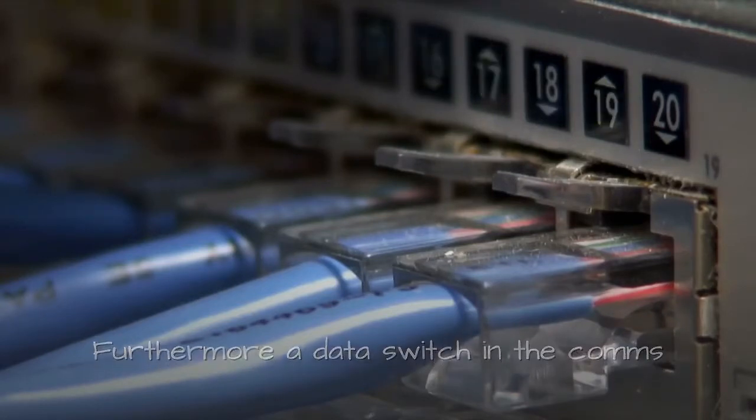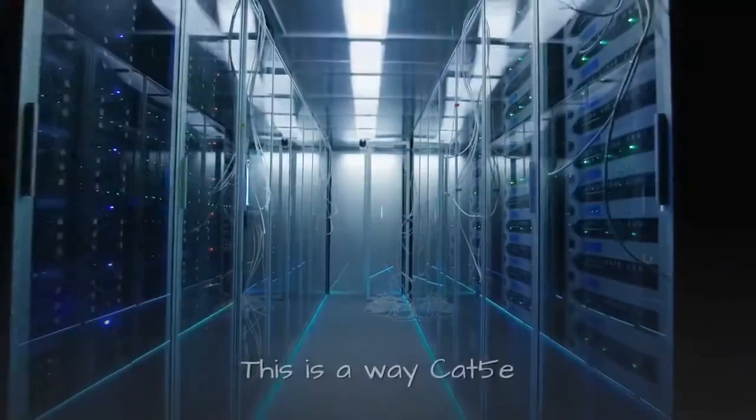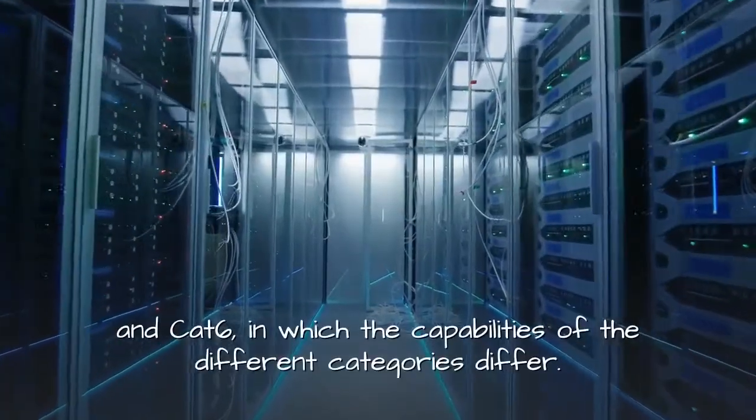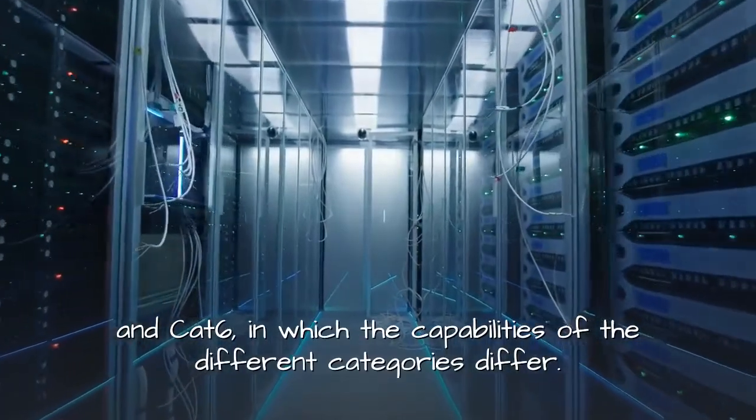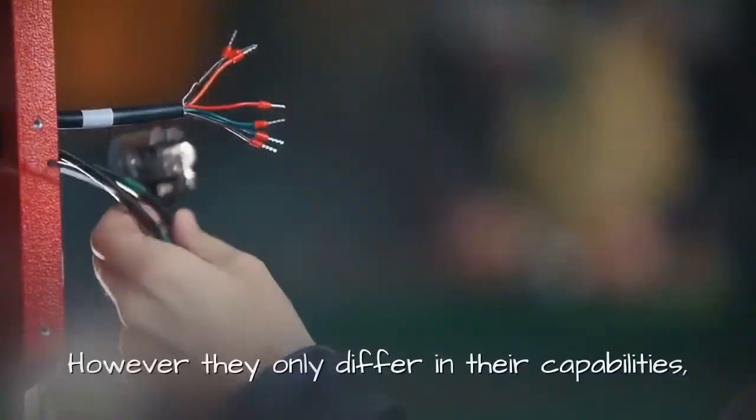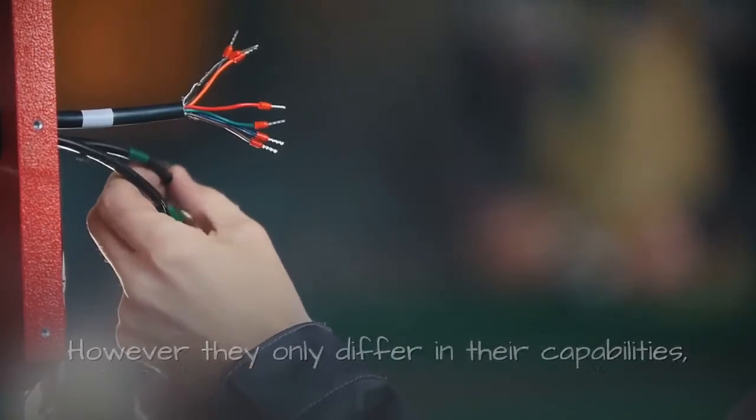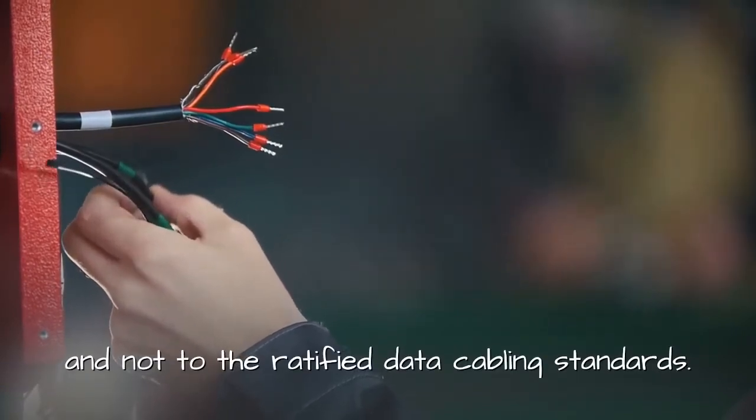Furthermore, a data switch in the comms cabinet will be rated in a similar way. This is a way CAT5e and CAT6 in which the capabilities of the different categories differ. However, they only differ in their capabilities and not to the ratified data cabling standards.